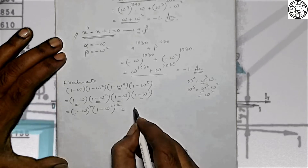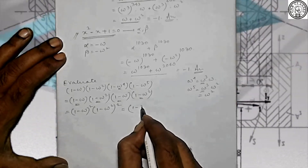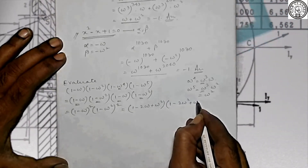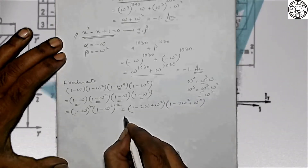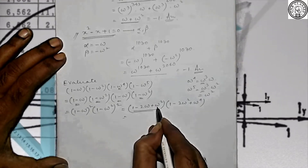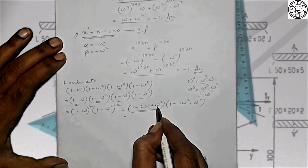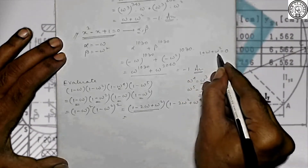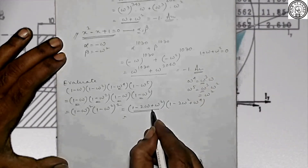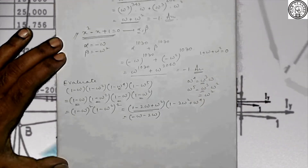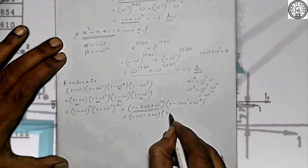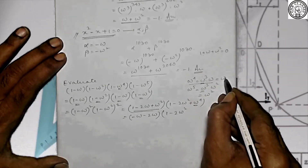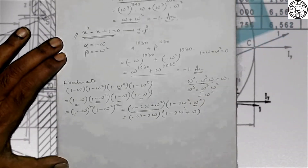Expanding (1 - omega)²: 1 - 2omega + omega². And expanding (1 - omega²)²: 1 - 2omega² + omega⁴. Since 1 + omega + omega² = 0, we have 1 + omega² = -omega. So the first becomes -omega - 2omega = -3omega. For the second: omega⁴ = omega, and 1 + omega = -omega², so it becomes -omega² - 2omega² = -3omega². Multiplying: (-3omega)(-3omega²) = 9 omega³ = 9.